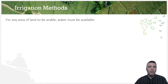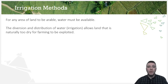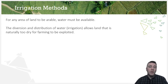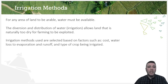Regardless of crop type, for any area of land to be farmed, water must be available. Irrigation is the diversion and distribution of water that allows naturally arid land to be developed for agriculture. California's Central Valley is a prime example — comprising less than 1% of all U.S. farmland, yet accounting for nearly 8% of all agricultural output, including nearly 40% of all fruits and nuts. Farms select irrigation techniques based on cost, water lost to evaporation and runoff, and the type of crop being irrigated.